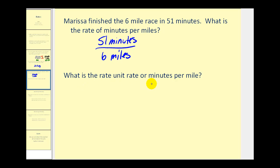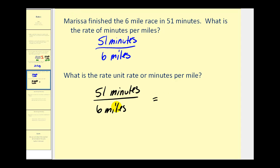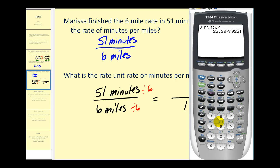If we want to know the unit rate, or minutes per one mile, we take this rate and rewrite it with a denominator of one mile. We divide by six to get one mile, and do the same to the numerator: 51 divided by six tells us how many minutes per one mile, which is 8.5 minutes per one mile.